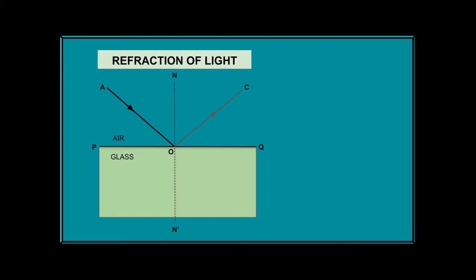We began by saying that light travels in a straight line, but when light enters from one medium to another it bends. In this case, traveling from air to glass, it bends towards the normal. The angle formed between the incident ray and the normal is called the angle of incidence. The angle between the reflected ray and the normal is the angle of reflection, and the angle between the refracted ray and the normal is called the angle of refraction.